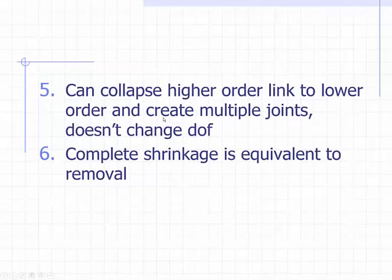Rule five of our transformation rules says that we can collapse higher order links to lower order and create multiple joints. But this does not change our degree of freedom. By higher order, we mean links that have more than two nodes. We can also do complete shrinkage, which is equivalent to removal. We'll see examples of this in a second.